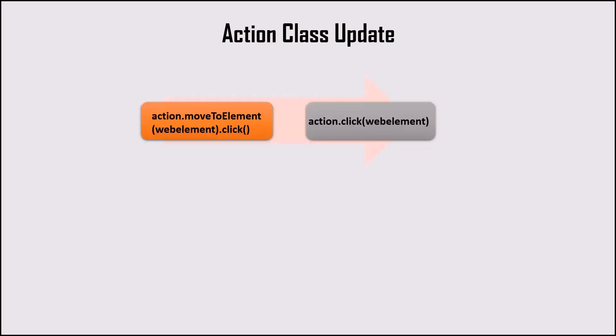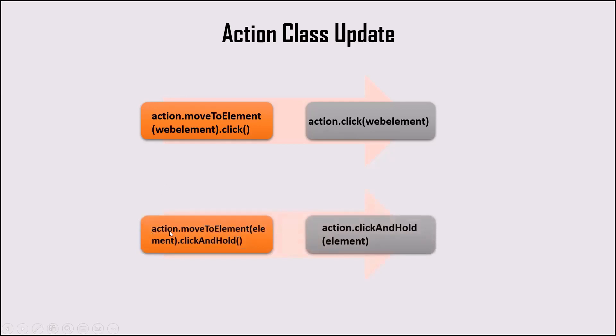In Selenium 4 there is also an update in the Action class, which is used to simulate keyboard and mouse events on a web element. There are some changes in the functions we use to simulate those events. For example, to click on a web element earlier we needed: action.moveToElement(webElement).click(). But now we can use: action.click(webElement) to perform a left click — in WebDriver 4 the moveToElement method is merged within the click method itself. Similarly, earlier we used action.moveToElement(element).clickAndHold() to hold an element, but now we can use action.clickAndHold(element) to perform a click-and-hold operation.